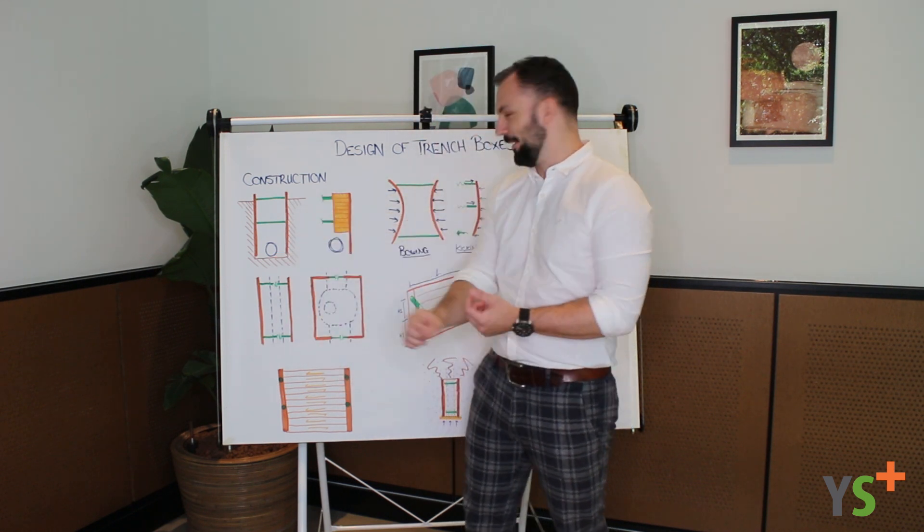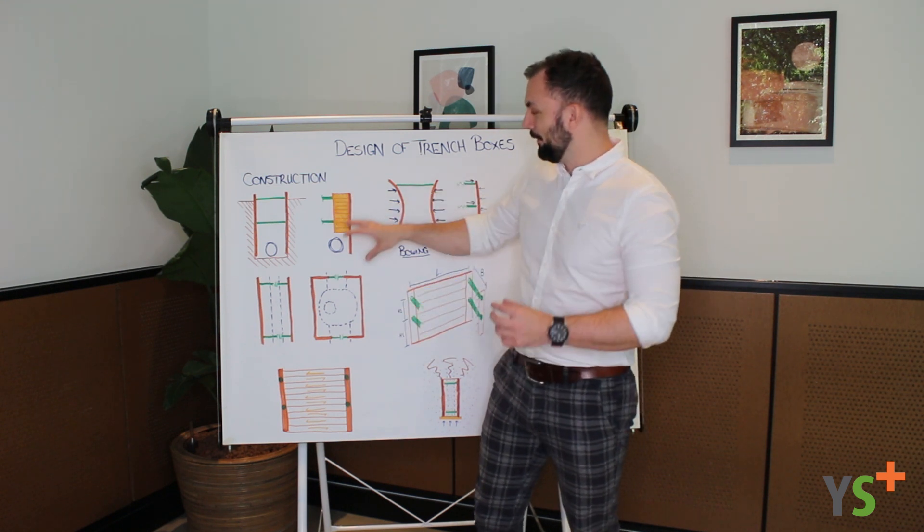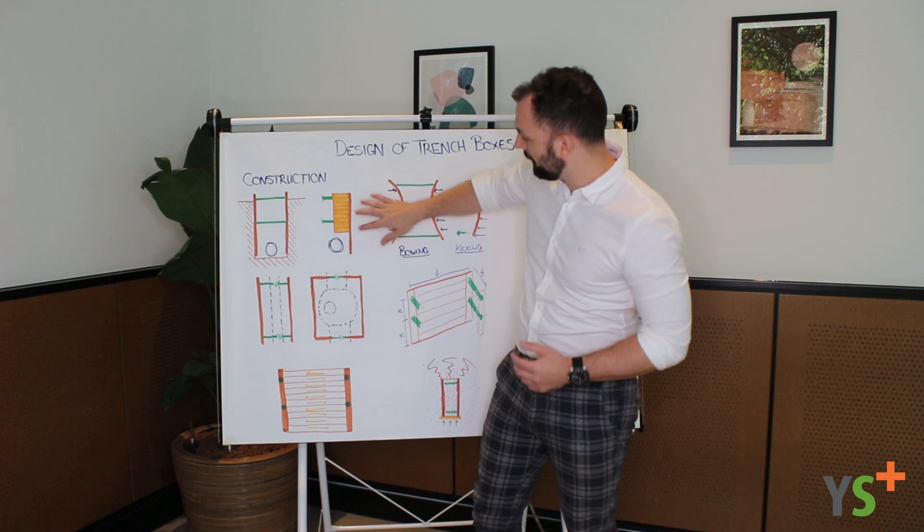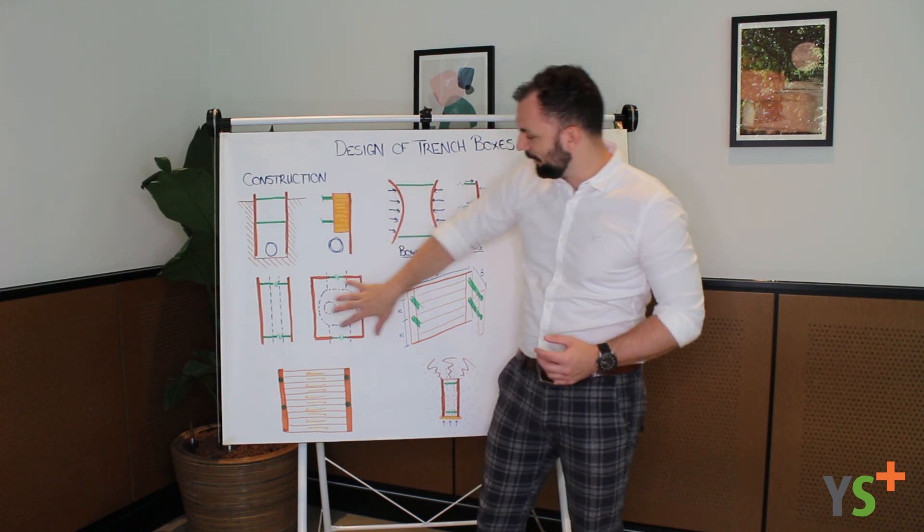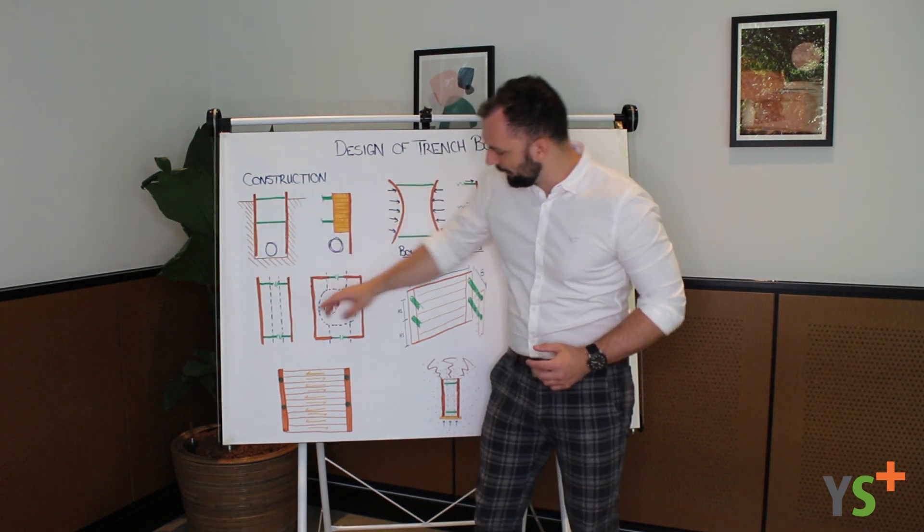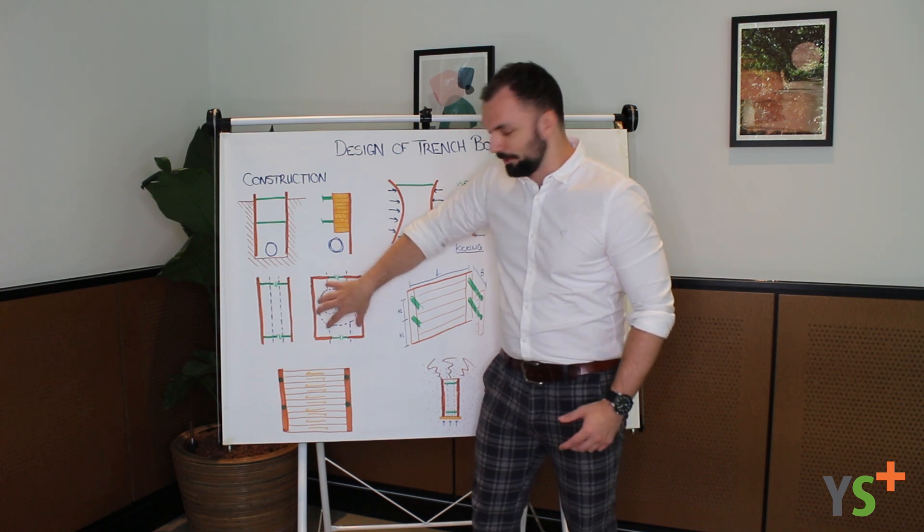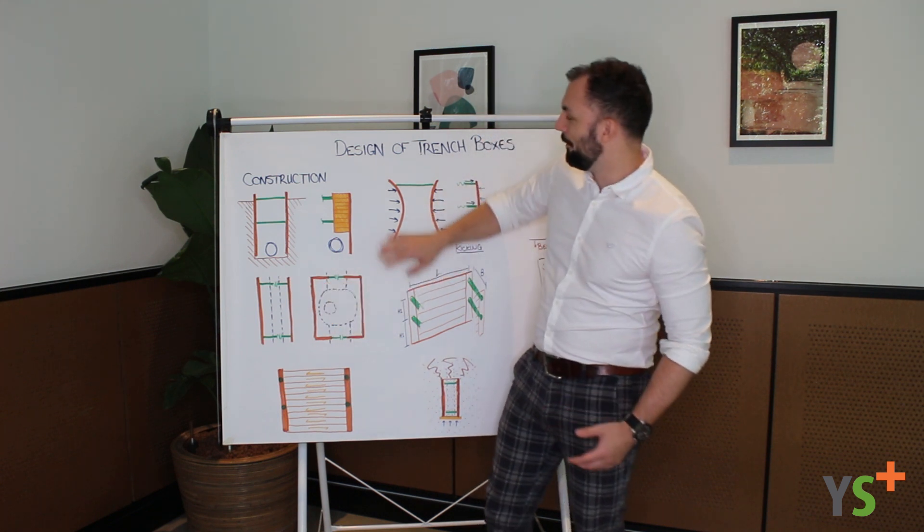Similar to a trench box is a manhole box. The only difference being that a manhole box tends to have these wings on them which, as you can see in the plan view here, the trench box is long and narrow, and a manhole box with its wings gives you a big square opening that, as the name suggests, lets you build a manhole inside the dig.